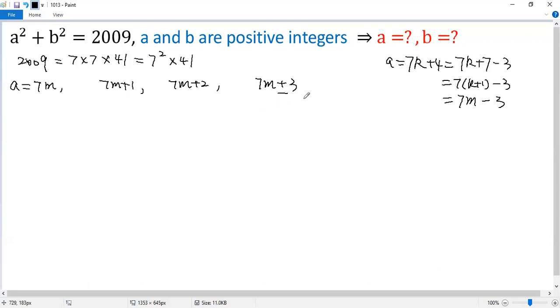Similarly, when the remainder is 5, you can write the situation as 7m minus 2, and when the remainder is 6, it's 7m minus 1.